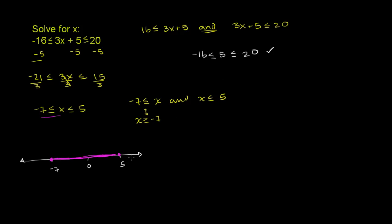Let's try 6, because 6 should not work. So we get negative 16 is less than or equal to 3 times 6 is 18, plus 5 is 23, which is less than or equal to 20. This part works if you put in 6, but this is not true. 23 is not less than or equal to 20. So it's good that 6 didn't work, because 6 is not in our solution set.